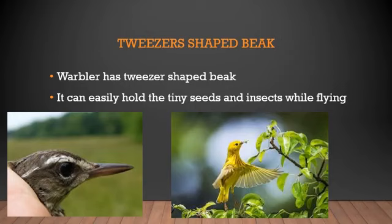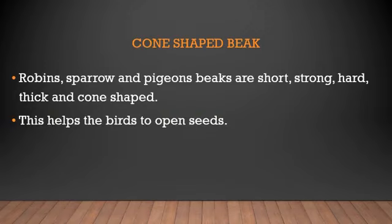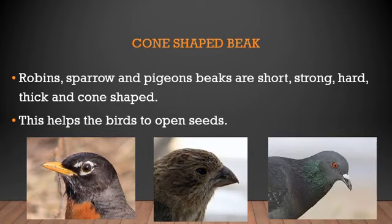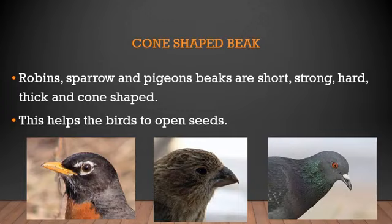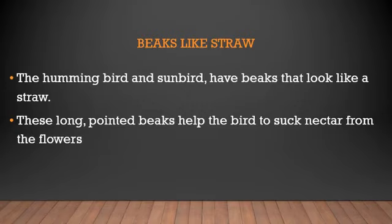The warbler's tweezer-shaped beak is used to hold tiny seeds and insects while flying. Next is the cone-shaped beak. The robin, sparrow, and pigeon have beaks that are short, strong, hard, thick, and cone-shaped. You can see the robin, sparrow, and pigeon here — they all have the same kind of cone-shaped beak, which helps them to open seeds and feed on fruits, rice, and similar foods.